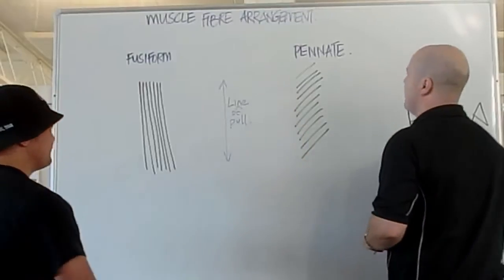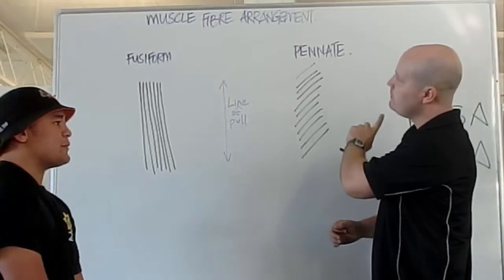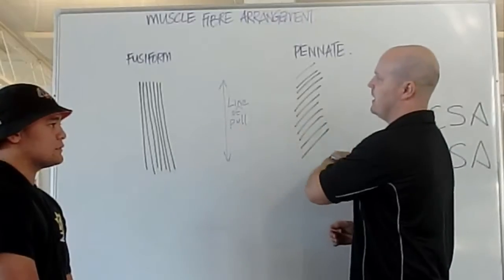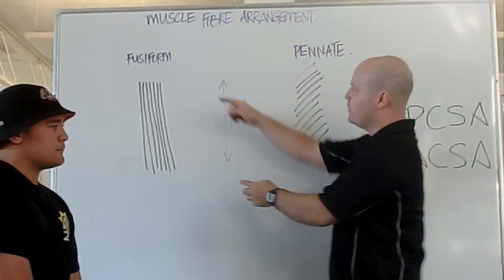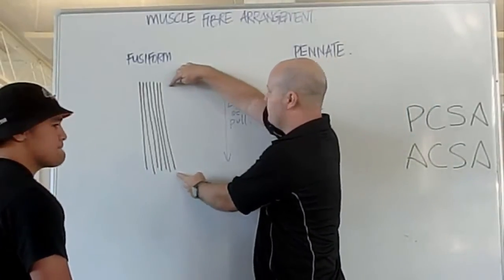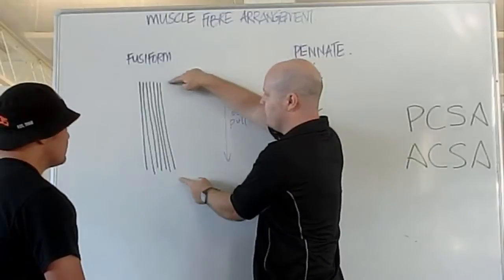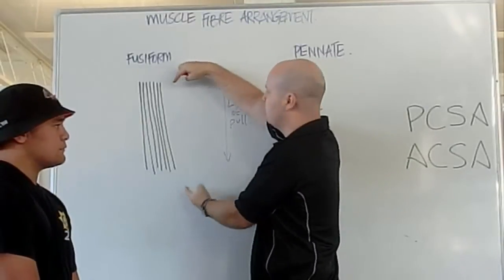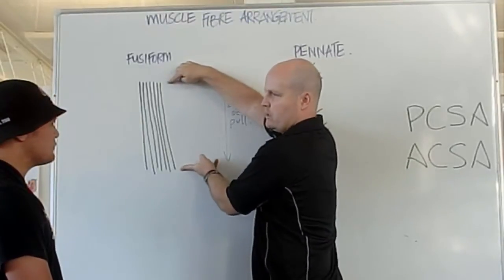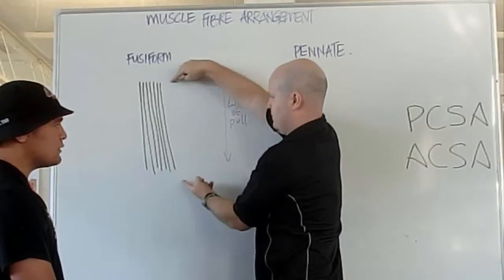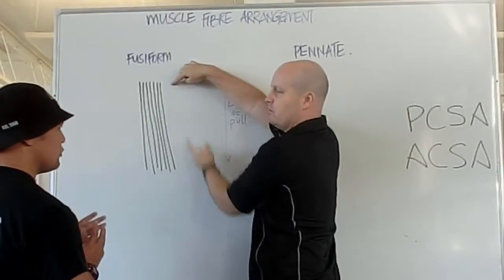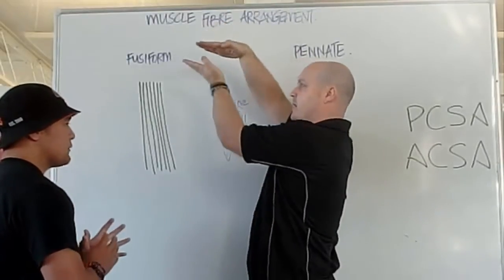Now, fusiform and pinnate are good for different things. Because our fusiform muscle fibres run parallel to the line of pull and they run the full length of the muscle, when they shorten, they're going to get really small. So they're going to have a big amount of shortening.